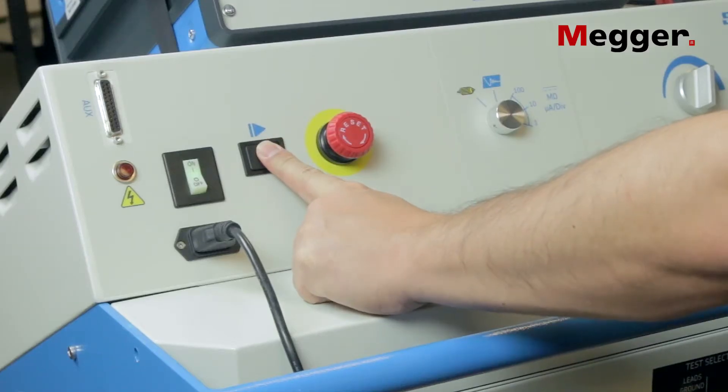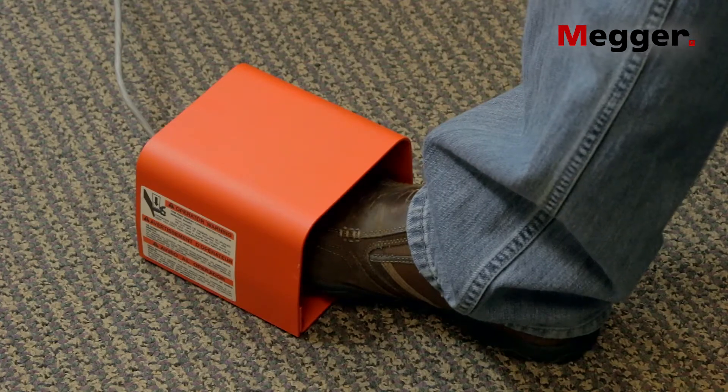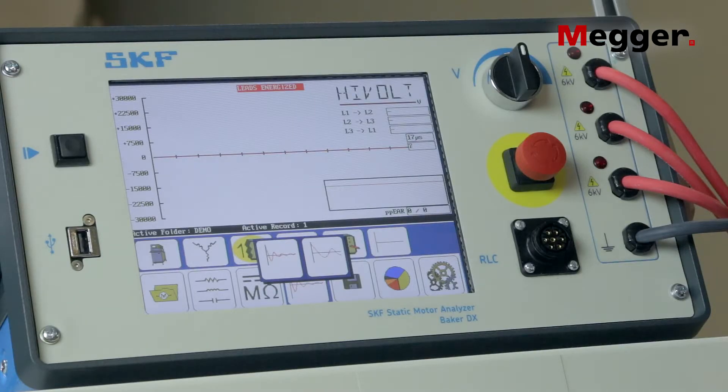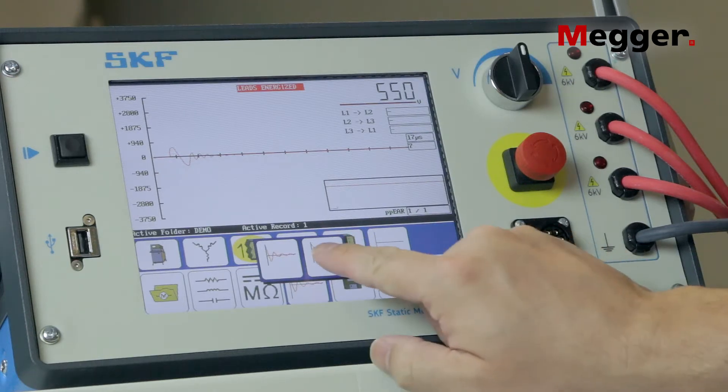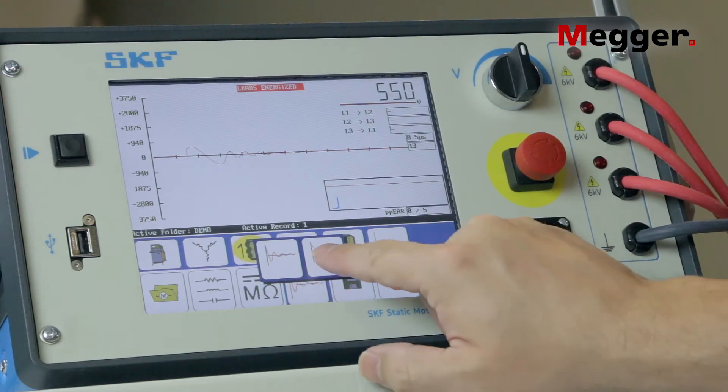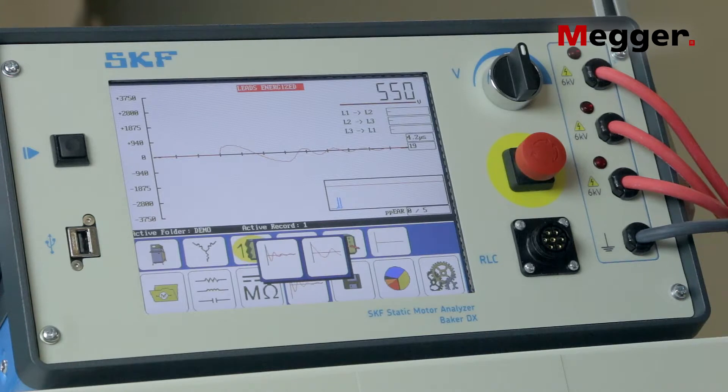Press and hold the push-to-test button or foot switch if connected. Slowly increase the voltage knob until the surge wave can be seen and then adjust the horizontal scale so that the waveform is shown across most or all of the screen. Slowly and continuously raise the voltage to the desired test value. In this case, 14,000 volts. Turning the knob smoothly minimizes the effects of ramping on the pulse-to-pulse EAR.